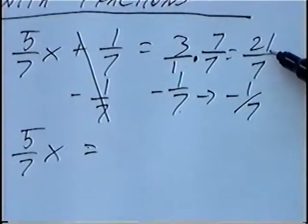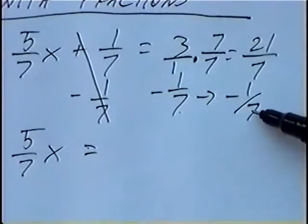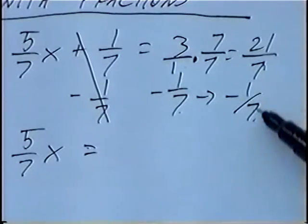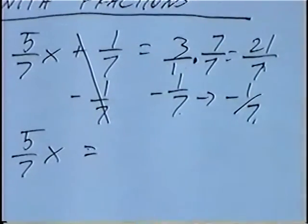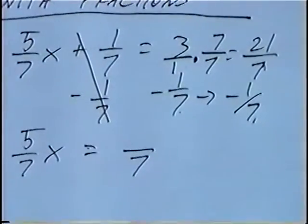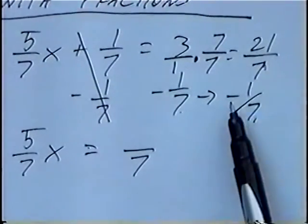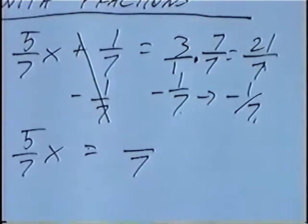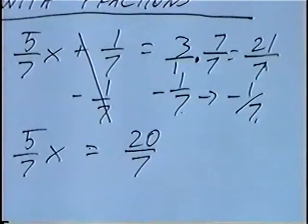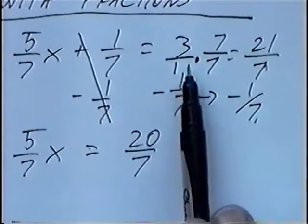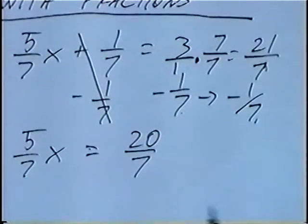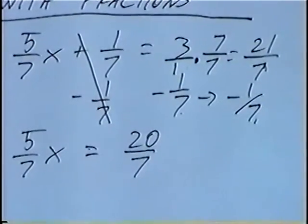So now we have 21 over 7 minus 1 over 7. Common denominators, where the bottom number is the same, would stay the same as 7. And we can subtract 21 minus 1, which would be 20. So the original expression 3 minus 1 over 7 would be 20 over 7.